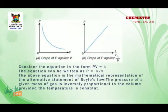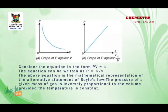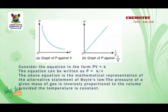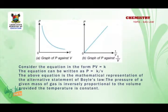Considering the equation in the form PV equals K, the graph shown depicts Boyle's law — that is, when pressure is plotted against V, or when P is plotted against 1 over V, you see a direct linear graph. The above equation is the mathematical representation of the alternative statement of Boyle's law: the pressure of a given mass of gas is inversely proportional to the volume, provided the temperature is constant.